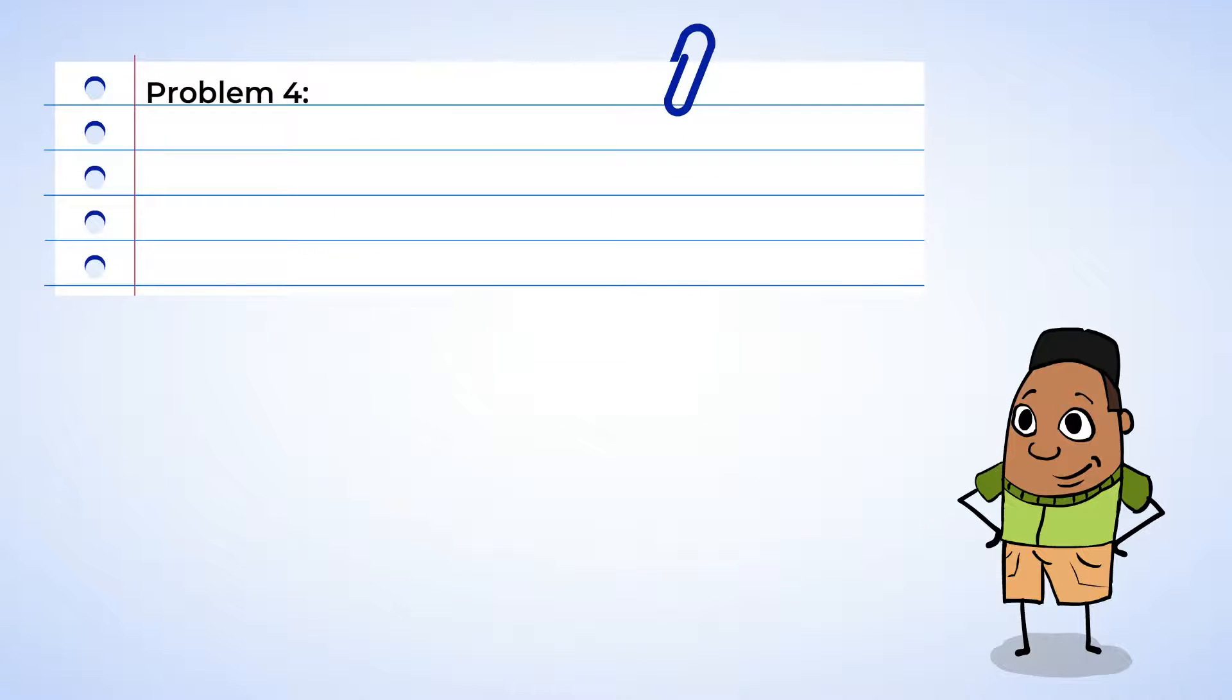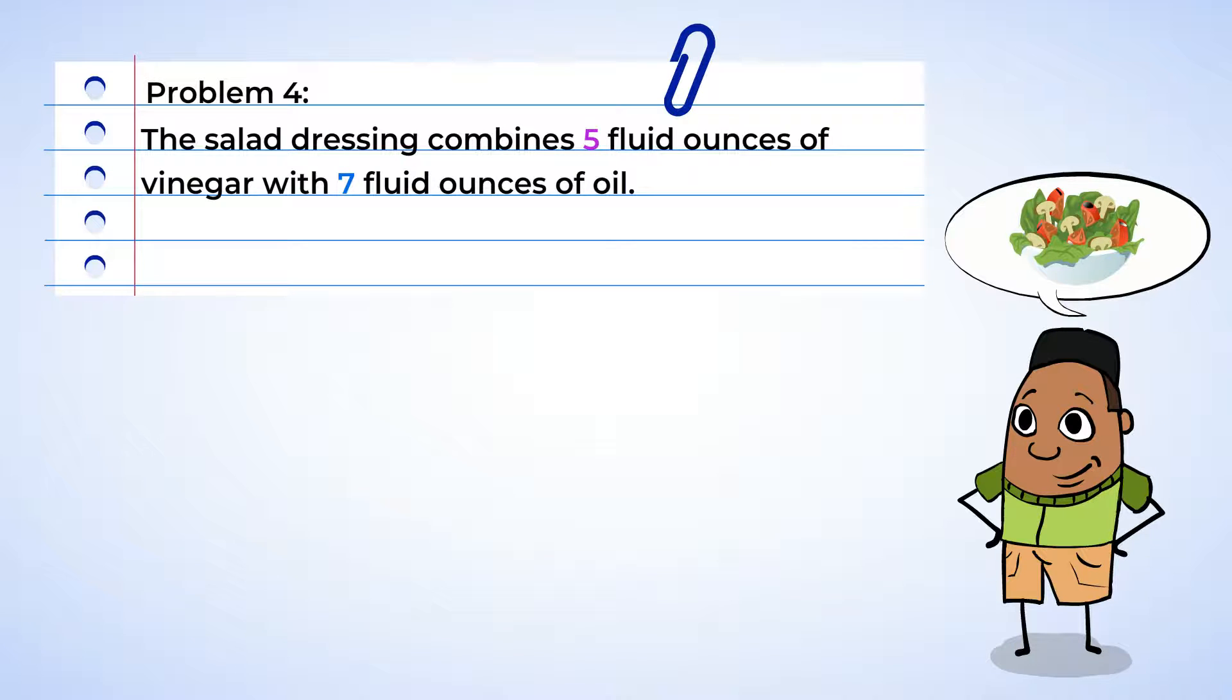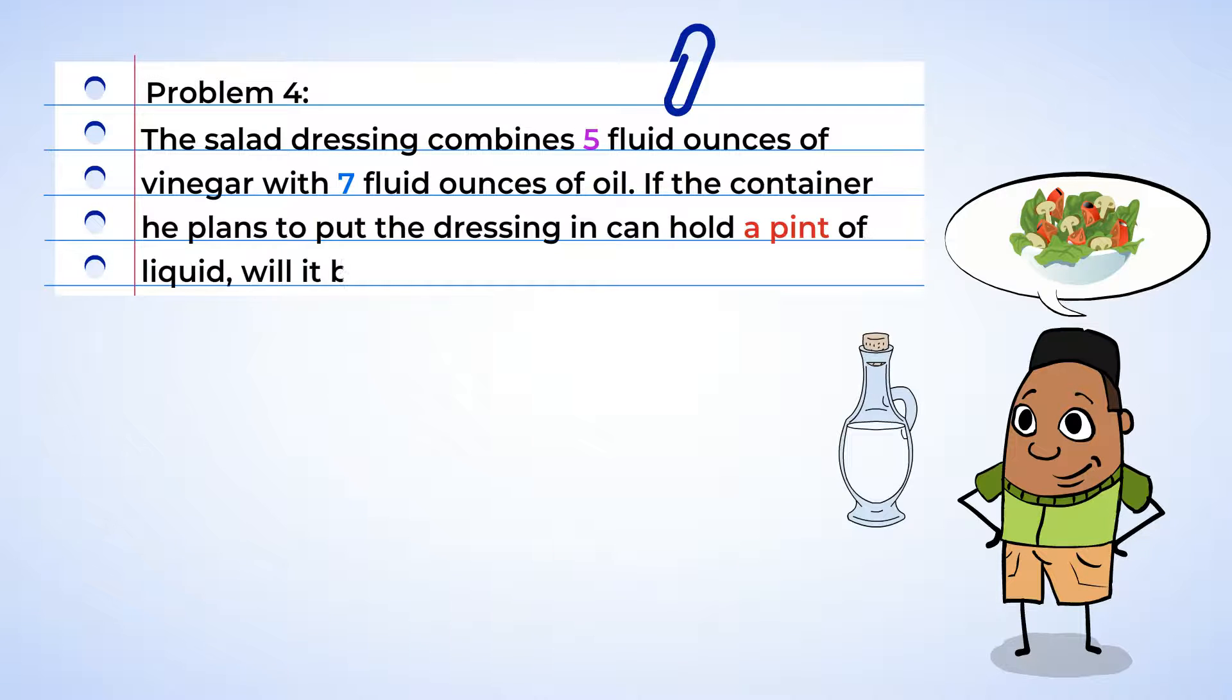Hey, what's Will doing? Looks like he's making a salad to go with his dinner. The salad dressing combines 5 fluid ounces of vinegar with 7 fluid ounces of oil. And if the container he plans to put the dressing in can hold a pint of liquid, will it be big enough for the dressing? Well, first, we need to find out how much dressing Will is going to be making altogether. So, 5 plus 7 is equal to 12. Will has 12 fluid ounces of dressing.